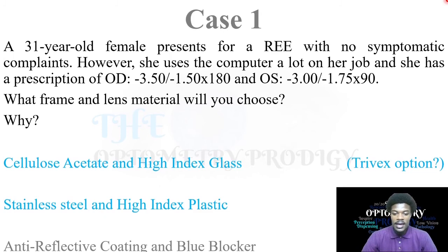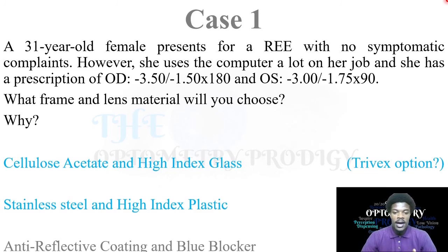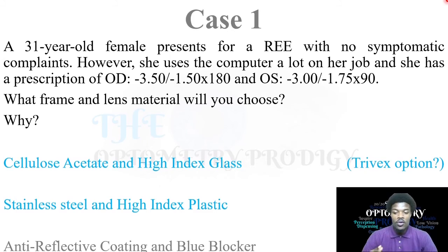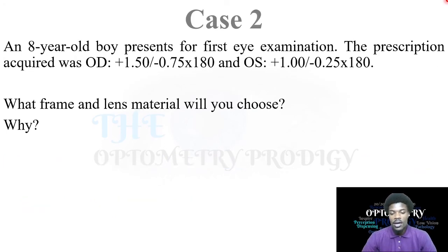Stainless steel with high index plastic could also work — stainless steel offers a lot of different colors and is a good style. High index plastic, while thicker than glass, may still work for the prescription. However, glass will generally be the better option as it is thinner. Anti-reflective coating and blue blockers would be a great addition here: because her prescriptions are high, the lenses will be thicker causing more internal reflections, so anti-reflective coating helps cancel that out. Also, since she uses a computer a lot, anti-reflective coating with a blue blocker is recommended.